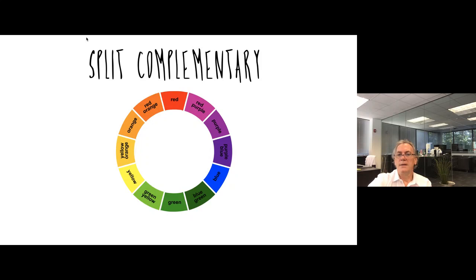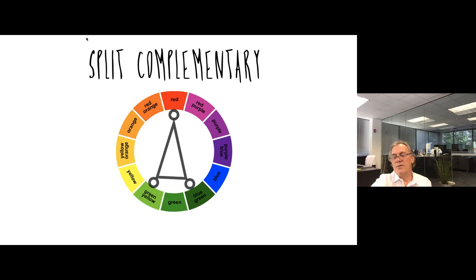The split complementaries are very similar to the complementaries. It's a combination of an analogous and a complementary scheme, and this gives us more variety and visual interest. And remember, they can be placed in any area of the wheel. The important thing is that they follow the same distance.